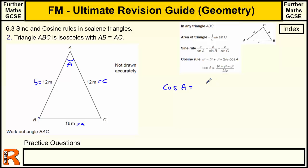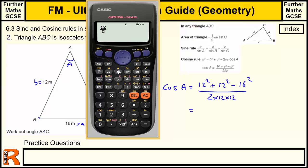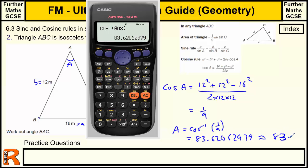So cos A equals b squared, which is 12 squared, plus 12 squared, minus 16 squared, all over 2 times 12 times 12. And we need the calculator. So, fraction 12 squared plus 12 squared, so that's 144, that's 144, minus 16 squared, which is 256, over 2 times 12 times 12. I'm going to get 1 ninth. And therefore, cos to the minus 1 of 1 ninth, which is the answer, is 83. So we want A is equal to cos to the minus 1 of 1 ninth, which is 83.62062979, approximately 83.6 degrees. So that was a pretty standard question.